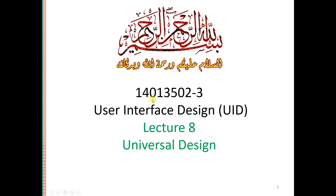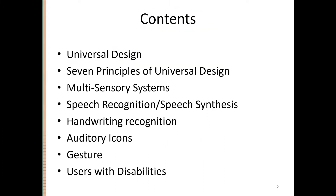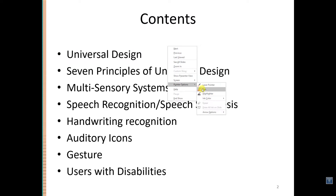Assalamu alaikum warahmatullahi wabarakatuh. Today we have a lecture about universal design. In this lecture we are going to discuss the following topics: what is universal design, the seven principles of universal design, and what are the principles which are helping us to make a design which can be used by a range of people, because this is the main topic. People have different abilities and come from different backgrounds, so we should design in such a way that the design can be used by a range of people.